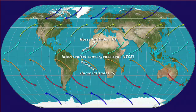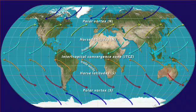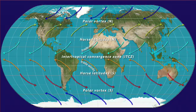Where the polar cells and Ferrell cells meet — the polar vortex — stormy conditions also prevail. This is why the temperate regions are commonly green.